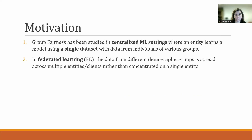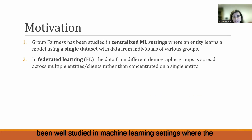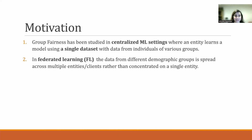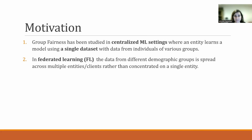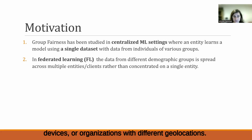This work is motivated by the fact that group fairness has been well studied in centralized learning settings where the data for training a model is gathered in a single entity. However, in settings such as Federated Learning, the data from different demographic groups is spread across multiple entities and cannot be shared directly. These entities, also called clients, could be different devices, user devices, or organizations with different geolocations.